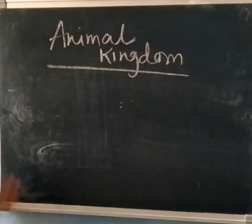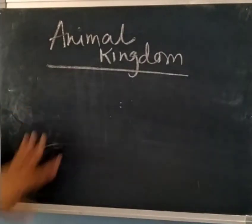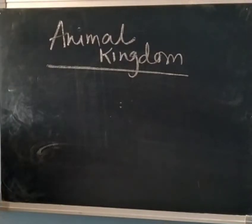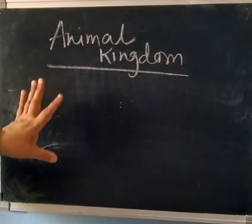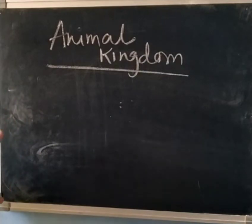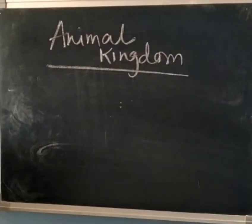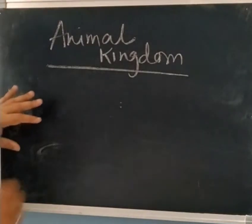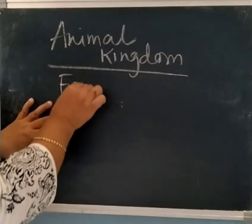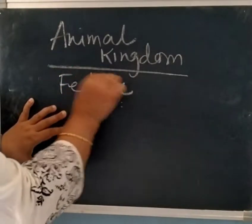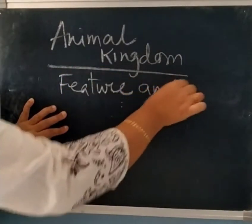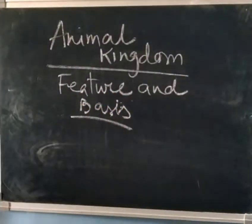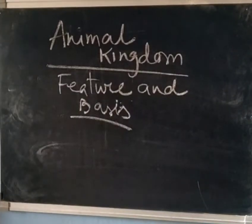Today we will start the discussion of animal kingdom. We have already completed plant kingdom, and animal kingdom is totally different from it. There are certain criteria that we have to discuss first. We will study the features and basis of classification.